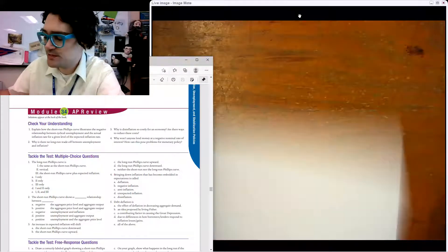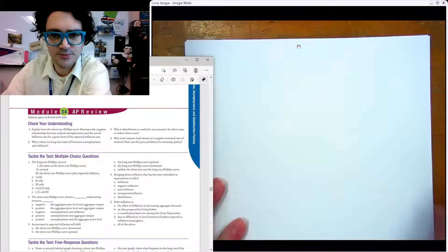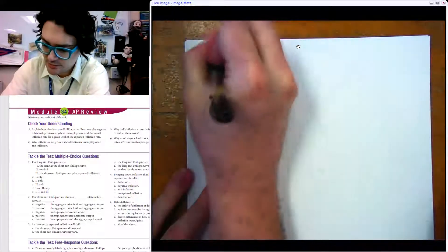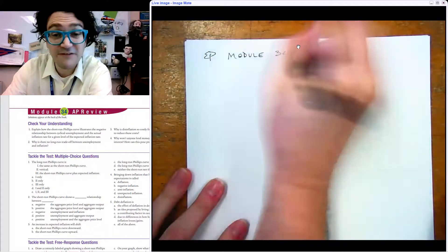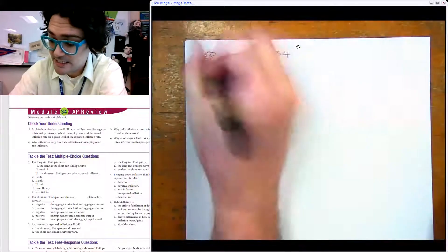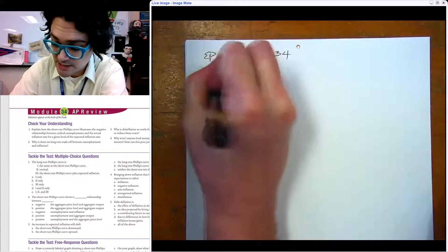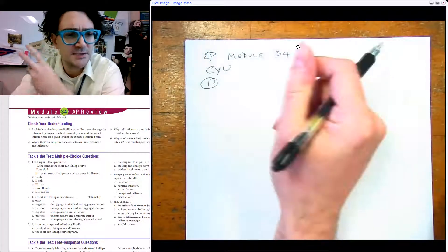Hello there, so in this video we're going to take a look at Module 34, extra practice for Module 34. This one's all about the Phillips Curve, which is really important for doing well on the AP test and on this unit exam. It's really the biggest new concept that we have to grapple with. The first question for check your understanding is explain how the short run Phillips curve illustrates the negative relationship between cyclical unemployment and actual inflation rate.